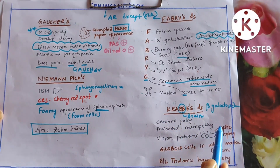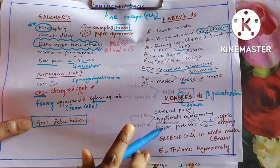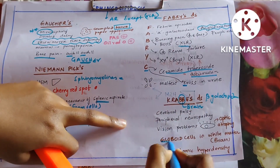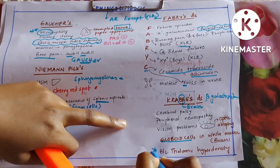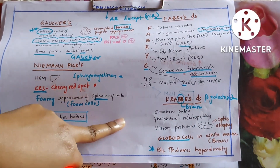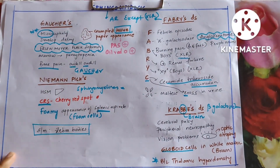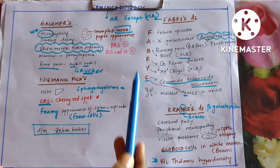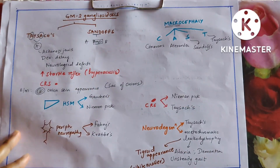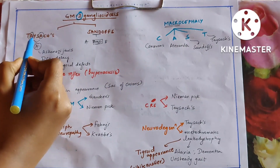Coming to Krabbe's disease: two B's — beta-galactosidase. B here denotes brain — cerebral palsy, peripheral neuropathy, and vision problems like optic atrophy. B again for globoid bodies — globoid cells are seen in the white matter of Krabbe's disease. Bilateral thalamic hyperdensity is also seen. These highlighted features are the clincher points to look for in clinical questions.